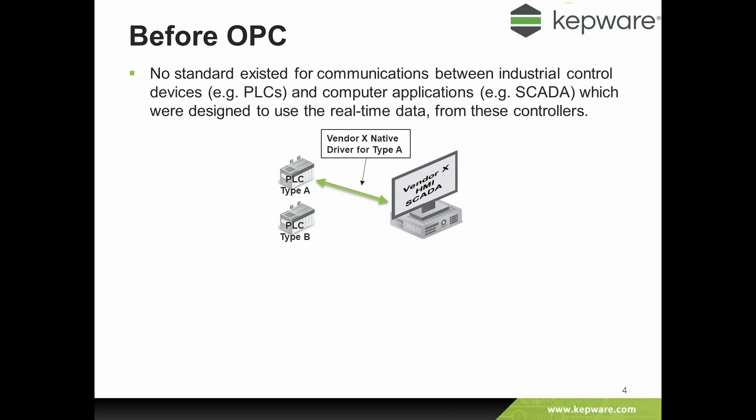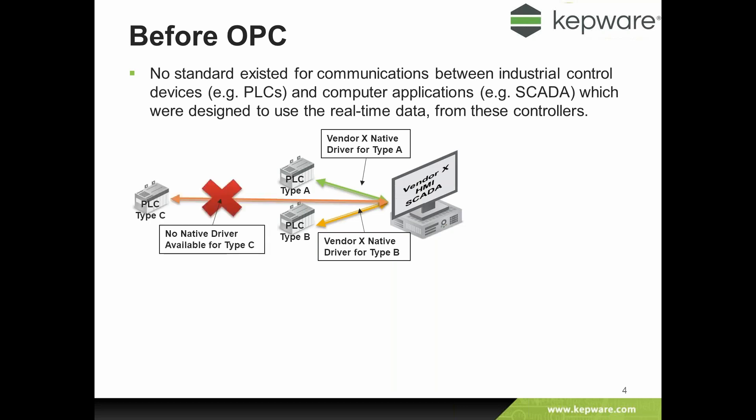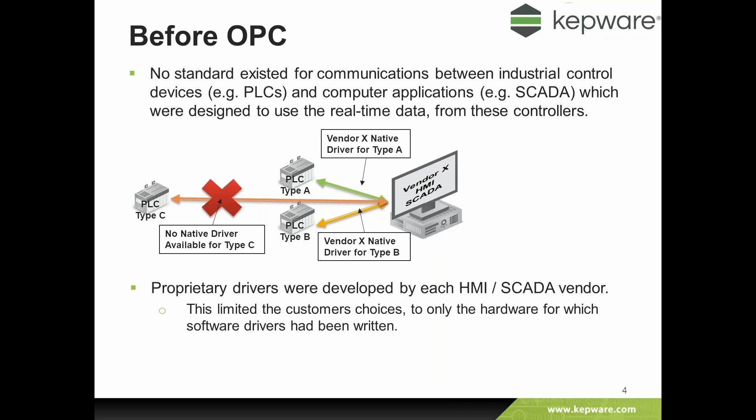In this diagram you'll see that the SCADA company is writing a native driver for PLC type A and another driver for PLC type B. But what happens if that SCADA or HMI software needed to communicate to a PLC type C, and the SCADA company hadn't written a driver for that? In effect, that software would not be able to communicate to those PLCs. The proprietary nature of drivers meant HMI and SCADA companies had to continually write new drivers, and if they didn't have the correct ones the customer wanted, their software was of limited appeal.